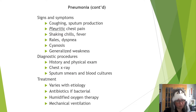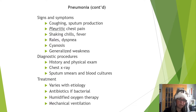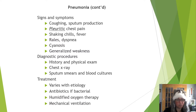To diagnose: history and physical exam, chest x-ray, and sputum collected for culture and gram stain smears, as well as blood cultures — because if bacteria are in the blood, they're more than likely in the lungs. Treatment varies depending on severity. Antibiotics are given, humidified O2 therapy, and mechanical ventilation may be needed if the lungs are too weak to fight an infection and function on their own.